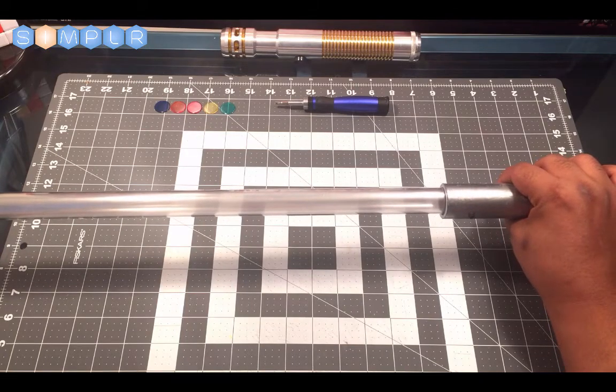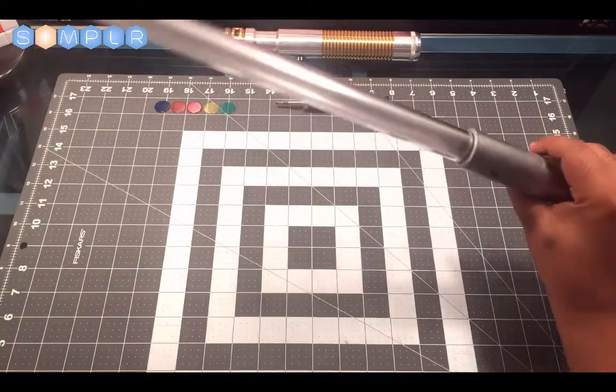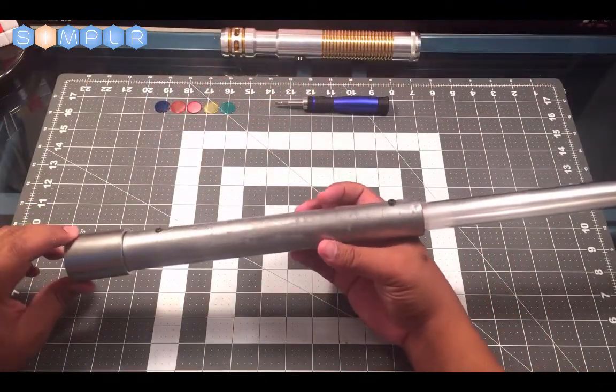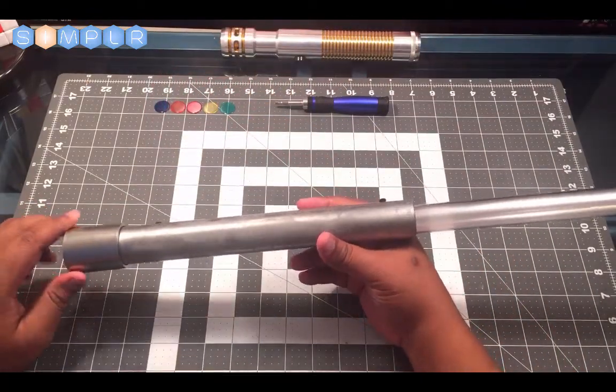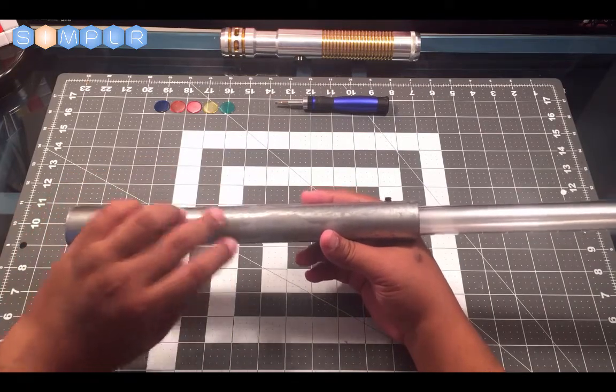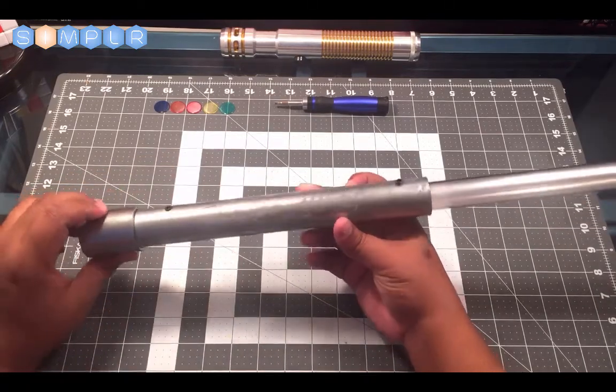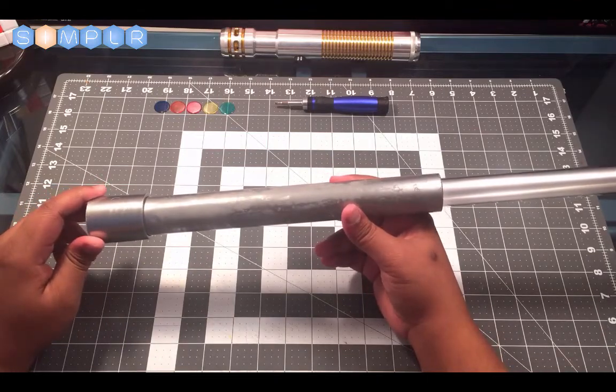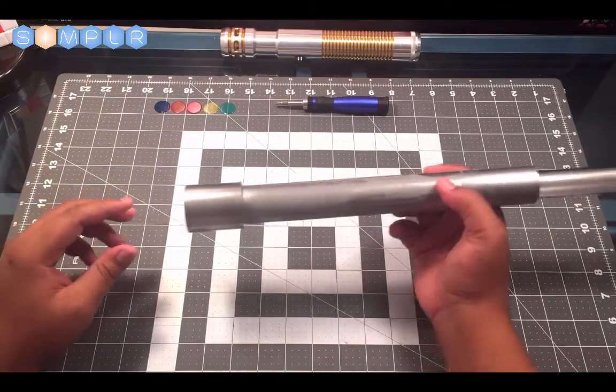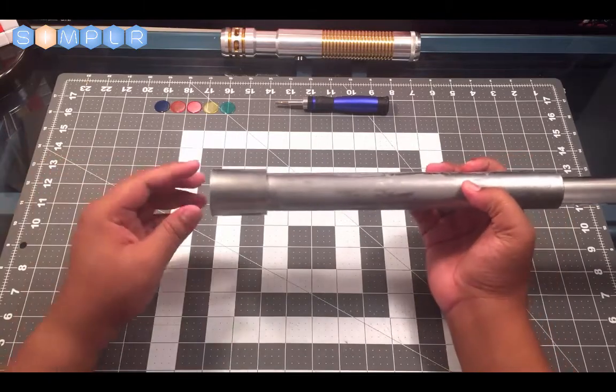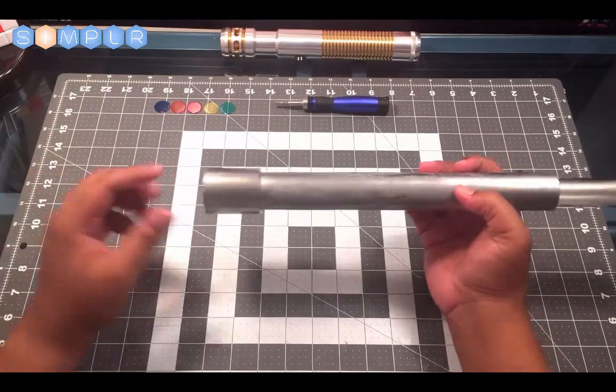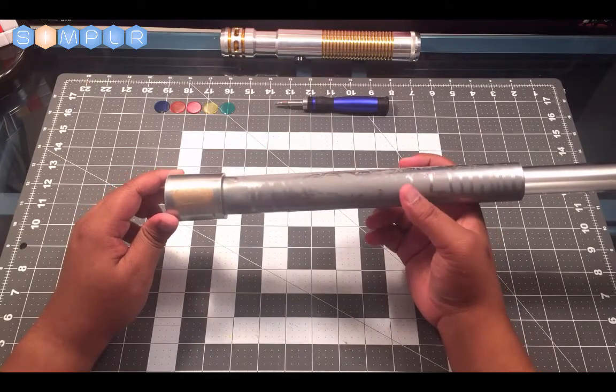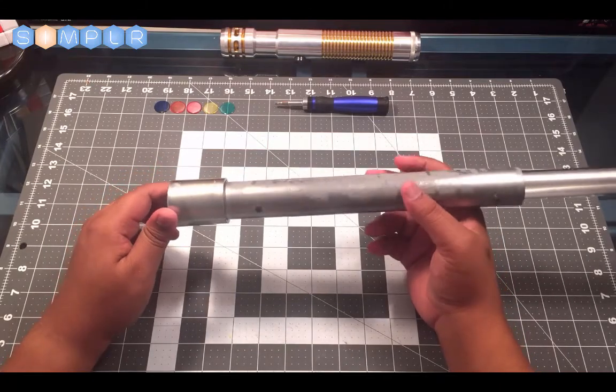And we'll show you in the next section how to customize your lightsaber with a few different things. And if you're inventive enough, you can actually take two of these and put them back to back and create your own lightsaber staff, similar to what Darth Maul has in the movie.